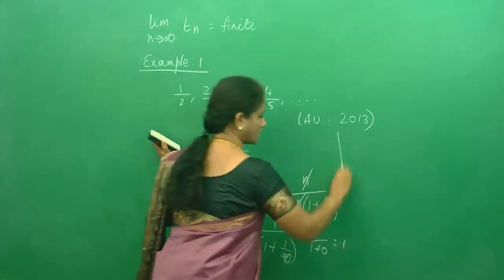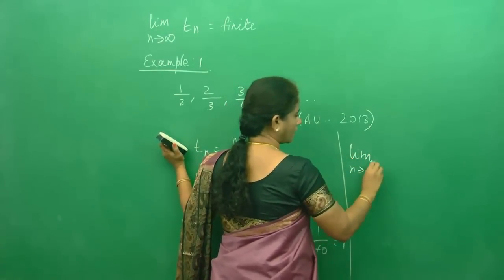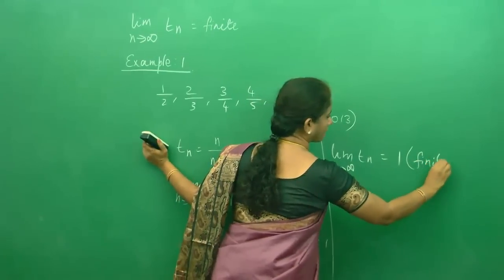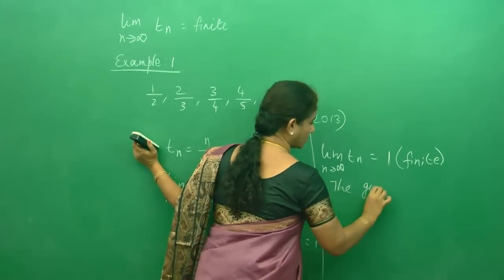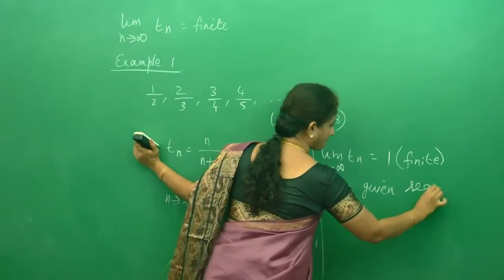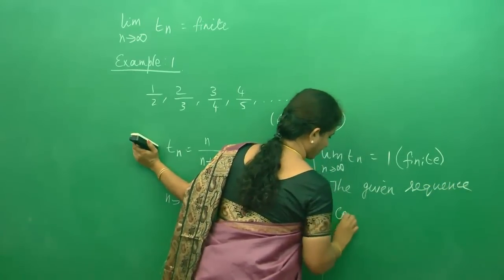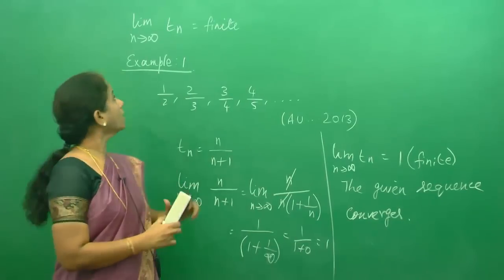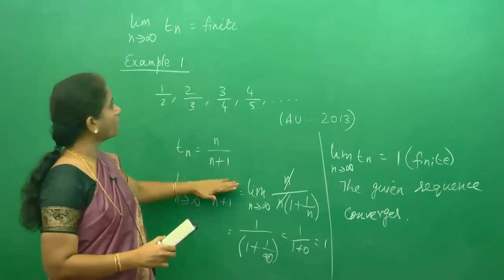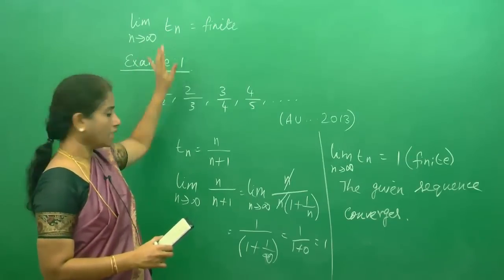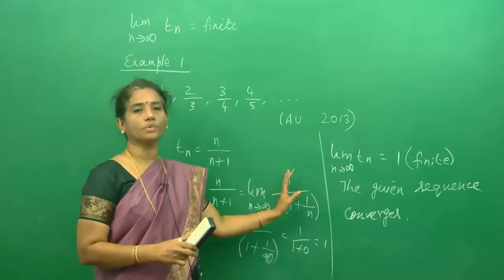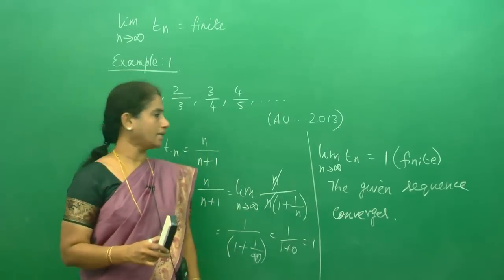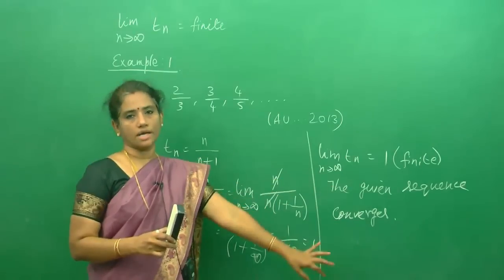So you will complete it like this: limit n tends to infinity of Tn is 1, and you will say it is finite. Because it is finite, the given sequence converges. For finding whether the sequence is convergent or not, we write the nth term using common sense, then find the limit as n tends to infinity by taking the highest power of n out from numerator and denominator. If it is finite, it is convergent; if not, it is divergent.